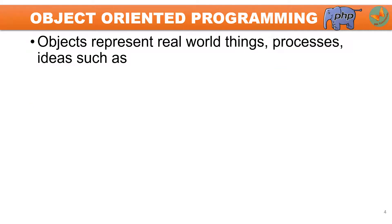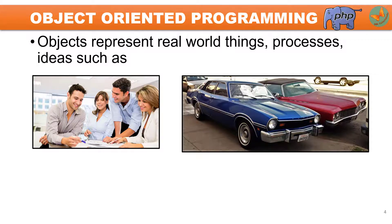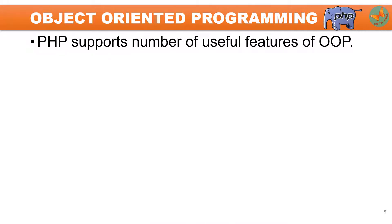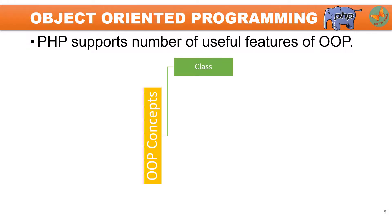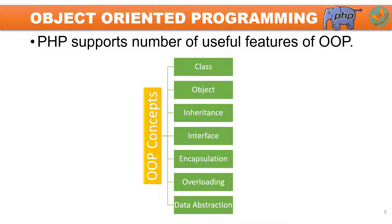Next let us try to understand the first word in object-oriented programming, that is object. So objects represent real-world things, processes, and ideas such as employees, cars, or bank accounts. PHP supports a number of useful features of object-oriented programming such as class, object, inheritance, interface, encapsulation, overloading, and data abstraction.